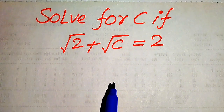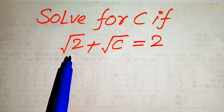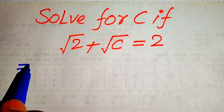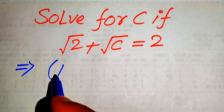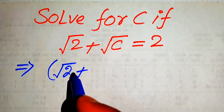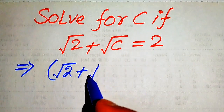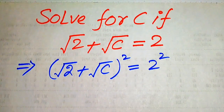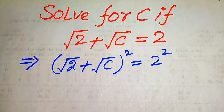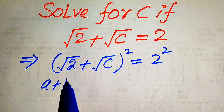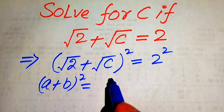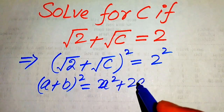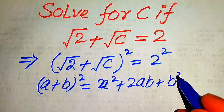The very first thing we are going to do is eliminate these square root signs from the left hand side. For this we take squaring on both sides, written as: square root of 2 plus square root of C, whole square, equals 2 squared. In the next step we use the algebraic formula: (a + b)² equals a² plus 2ab plus b².